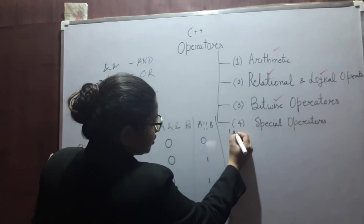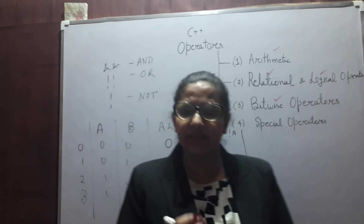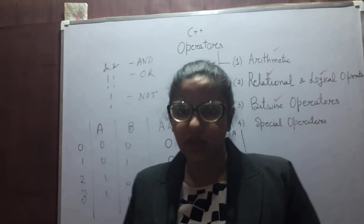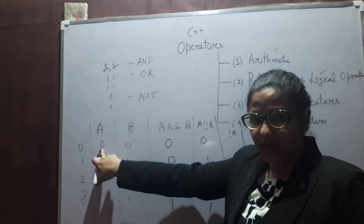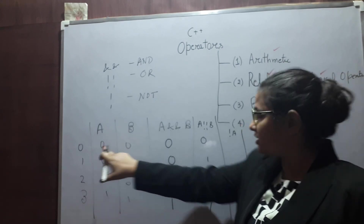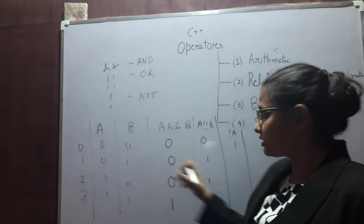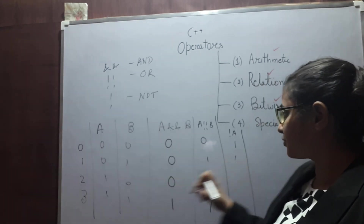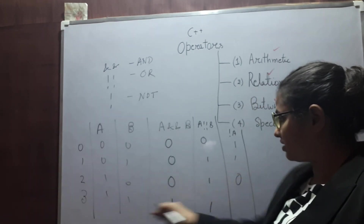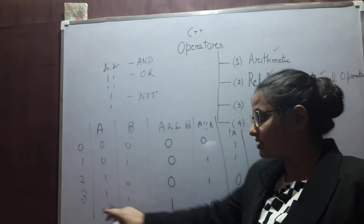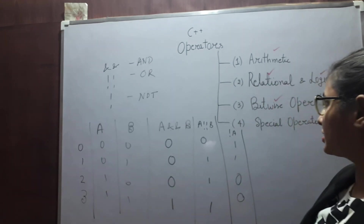For NOT A, you simply reverse the value. If A is false, make it true. If A is true, make it false. So NOT inverts each input value.